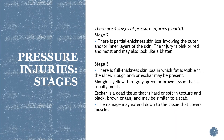Stage two: there is partial thickness skin loss involving the outer and/or inner layers of the skin; the injury is pink or red and moist, and may also look like a blister. Stage three: there is full thickness skin loss in which fat is visible in the ulcer; slough or eschar may be present. Slough is yellow, tan, gray, green, or brown tissue that is usually moist. Eschar is dead tissue that is hard or soft in texture and black, brown, or tan — similar to a scab. The damage may extend down to the tissue that covers muscles.